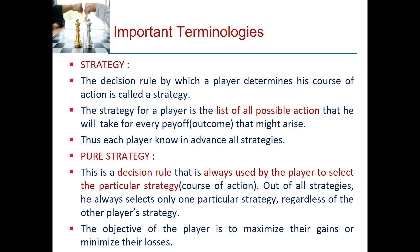Next is strategy. The strategy of a player is the list of all possible actions that he will take for every payoff — that is, outcome — that might arise. The player knows in advance all the strategies of this player and the opponent player.